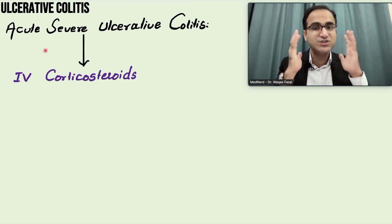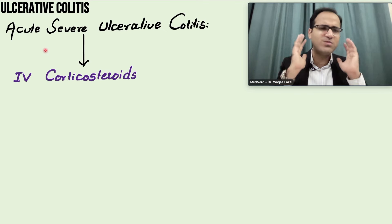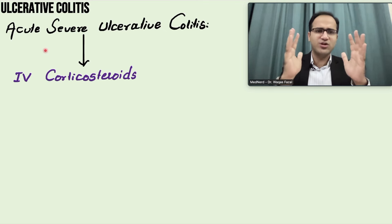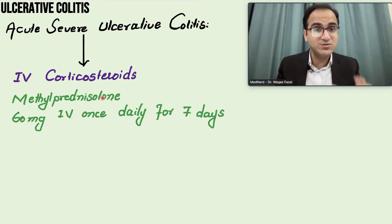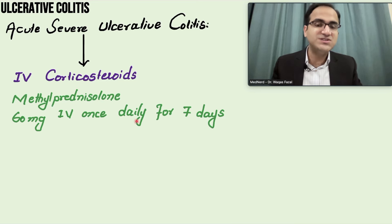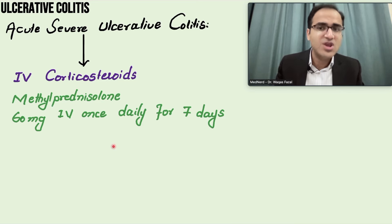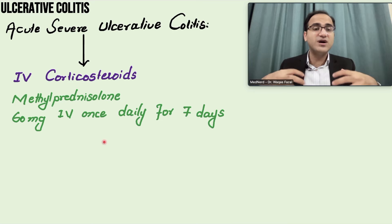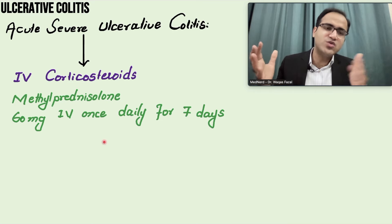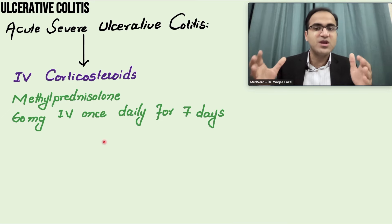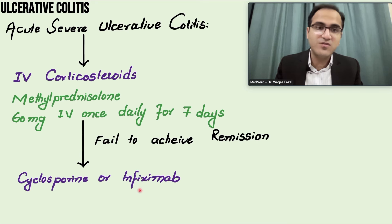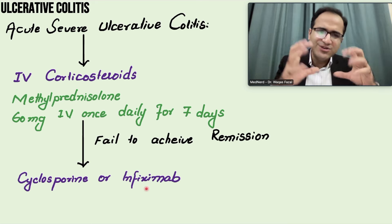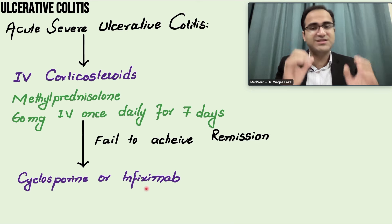For acute severe ulcerative colitis, administer IV corticosteroids: methylprednisolone (Solu-Medrol) 60 mg IV once daily for 7 days. Once the patient comes out of the exacerbation, shift to mesalamine and azathioprine — do not continue steroids long-term. If the patient fails to achieve remission, cyclosporine or infliximab can be used as immunomodulatory drugs to reduce immune response and gut inflammation.